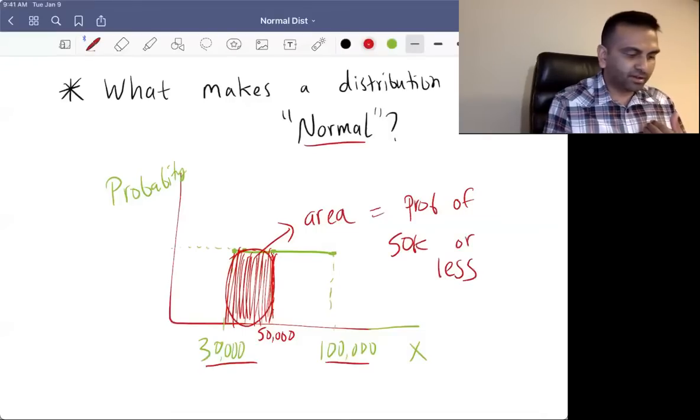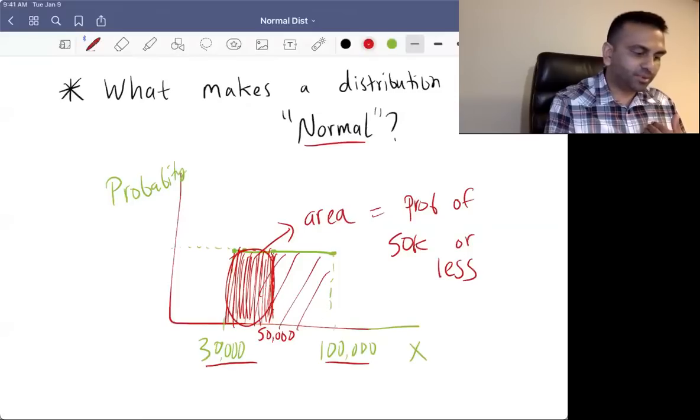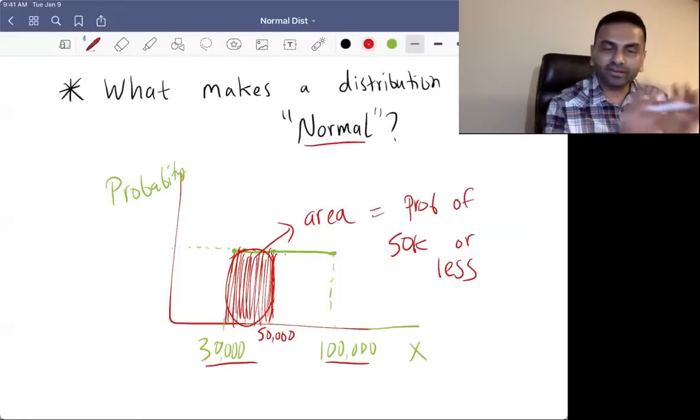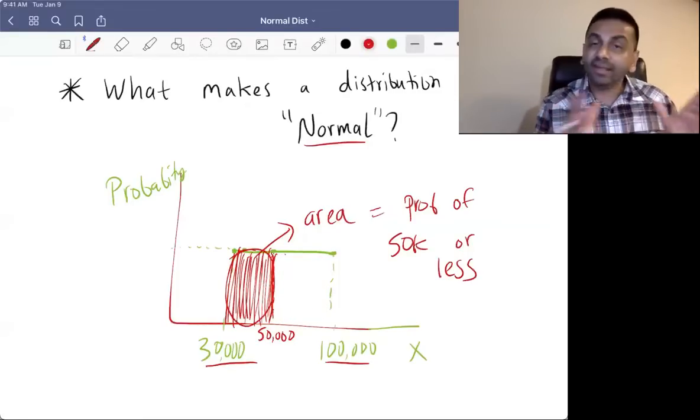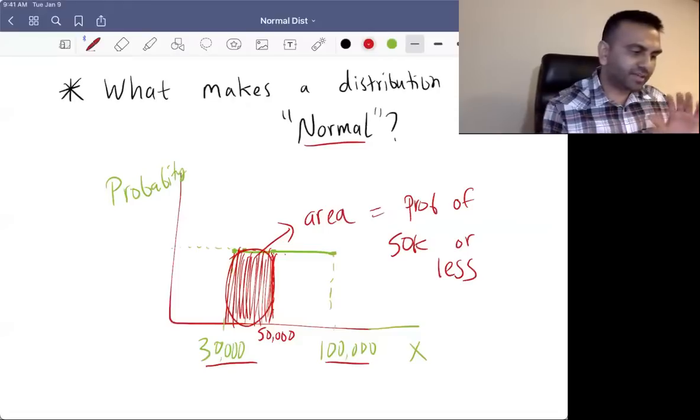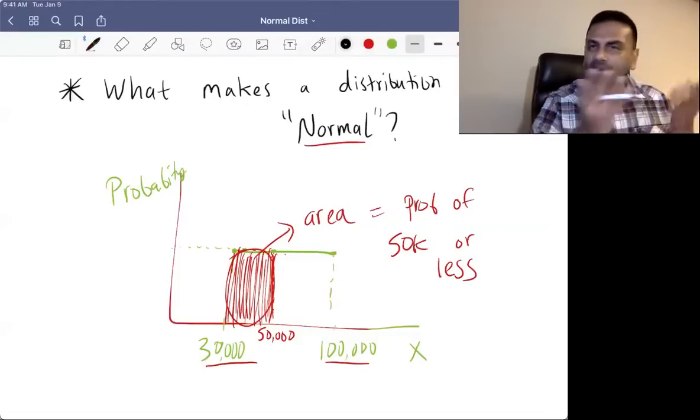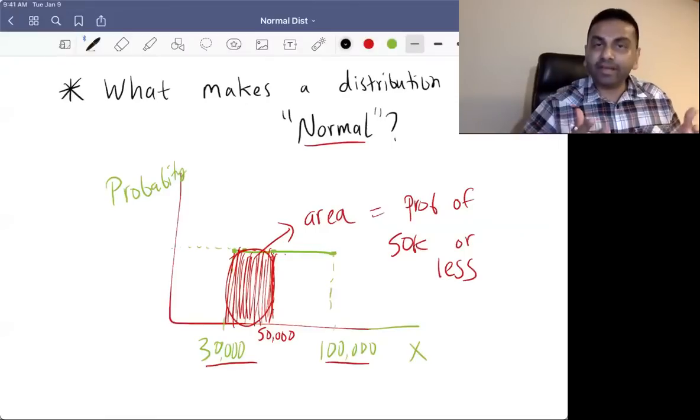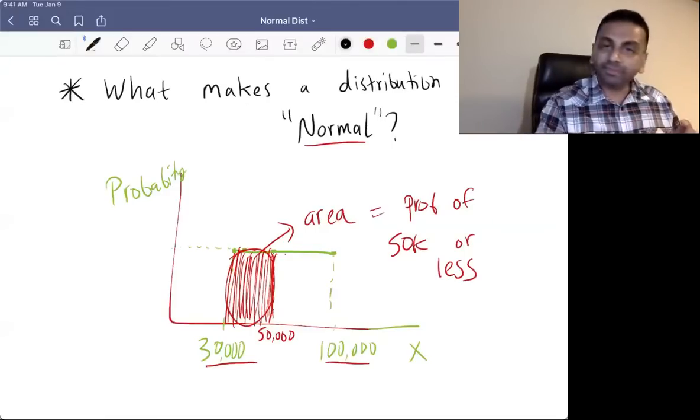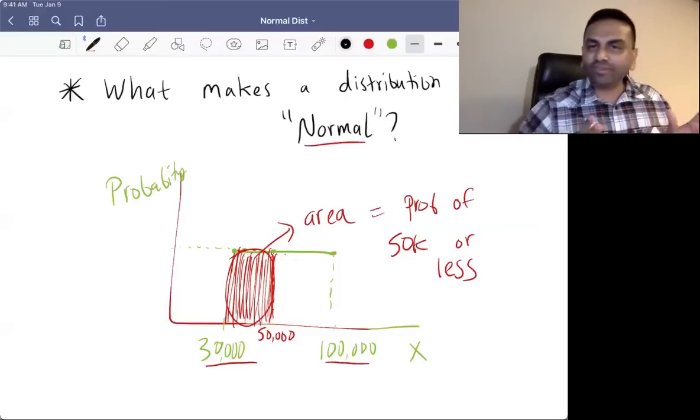So obviously, all of this has to sum up to 100% because there's 100% of people in that distribution. So this is what a random variable is. Again, it's something that can take on one of many values, each value with a different probability, and if you graph out what's the probability of each of those values, that's a distribution, a PDF.